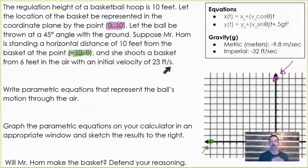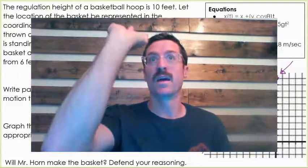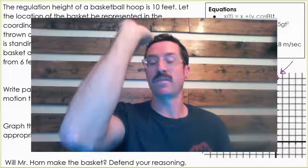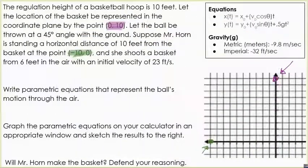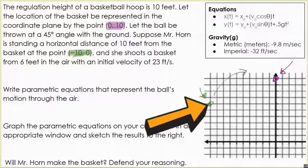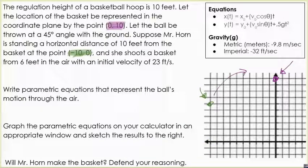And then I'm going to shoot the ball from 6 feet in the air with an initial velocity of 23 feet per second, because you've got to remember, whenever I shoot a basketball, I'm not shooting off the ground. It's going to be about 6 feet high if it's right here. So the ball is actually being launched from this point right here, and we're shooting it up this way, and I'm going to try to find out if I make the basket.